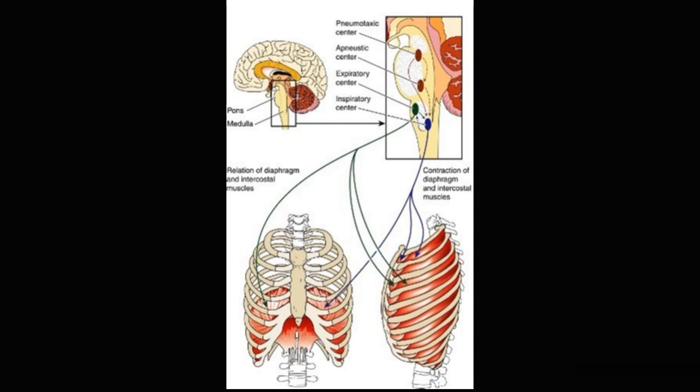Respiration is controlled by several centers in the brain: the pneumotaxic center, the expiratory center, and the inspiratory center — all located in the pons and medulla. What they respond to primarily is CO2, with some response to oxygen as well. These centers recognize when you need more air or more oxygen, or need to reduce CO2, and respond by stimulating the respiratory center and breathing.